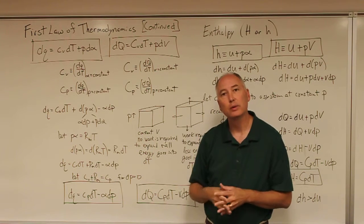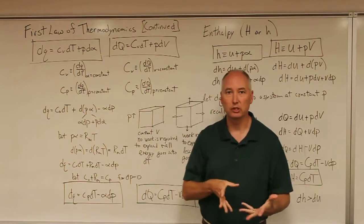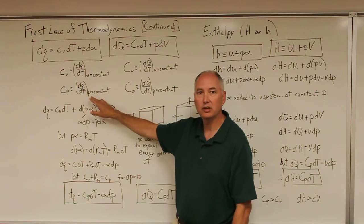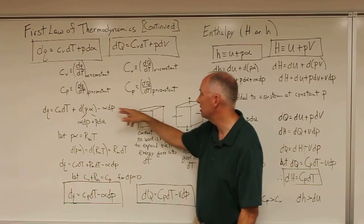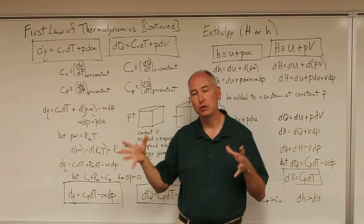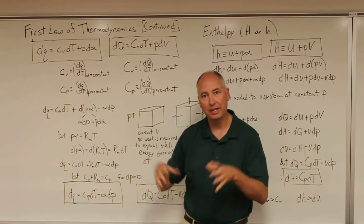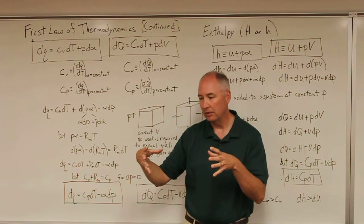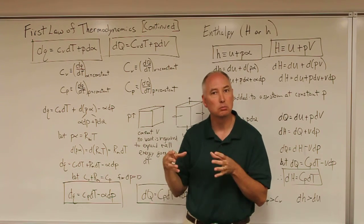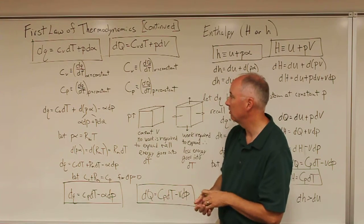In this lecture, we're going to introduce the concept of the specific heat at constant pressure, which is the same sort of definition except that the conditions are held at p equals constant. This is more representative of what actually goes on in the atmosphere. If you think about the absorption of solar radiation by an air parcel, that air parcel is going to absorb that energy and be subjected to constant pressure during that absorption, as opposed to constant volume.